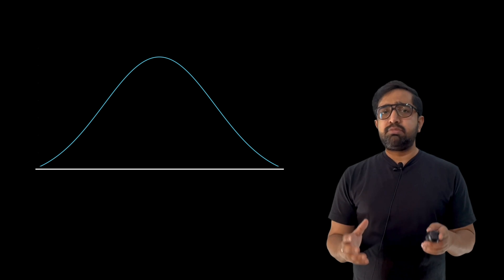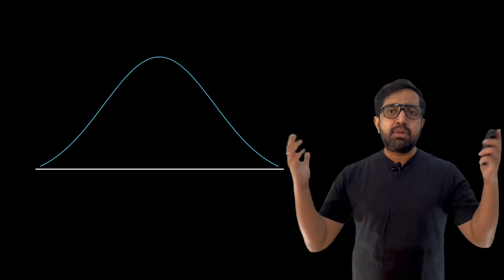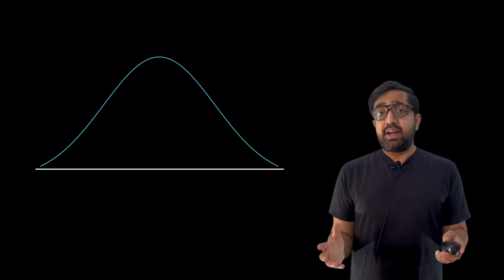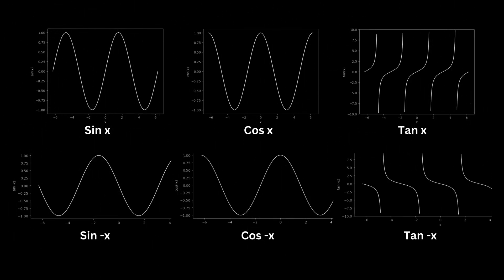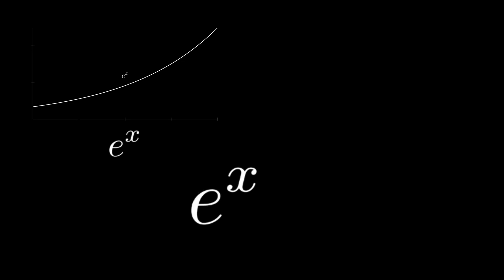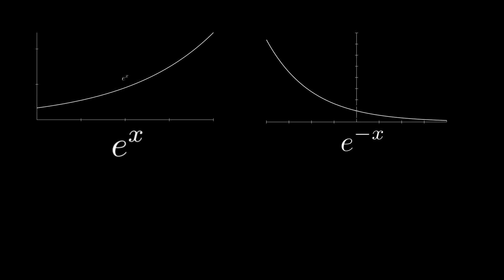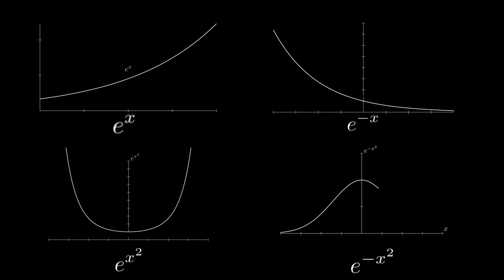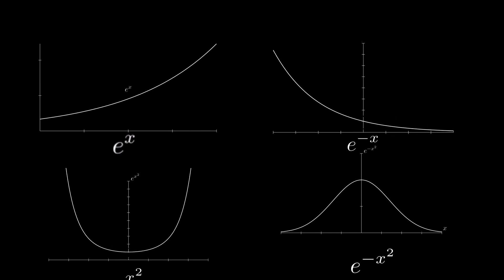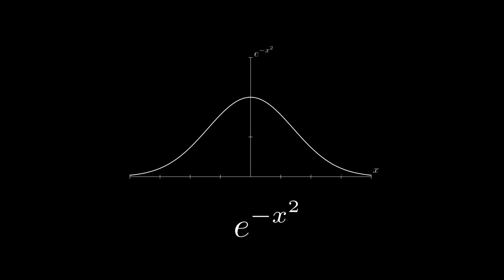First, Mr. Gauss might have thought: let's fit any mathematical equation which fits the shape of a bell curve. He may have started playing with well-known functions like sin x, cos x, tan x, or their inverses, but when all trigonometric functions failed — none being close to the bell curve — he would have turned to e^x. But again, e^x is an increasing curve, so he tried e^(-x), then e^(x²), and finally reached e^(-x²), which does look like a bell curve.